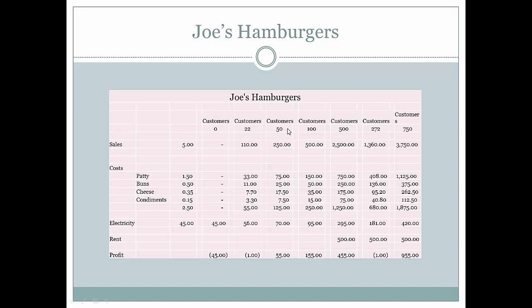Now with 50 customers, he earns $250. $125 of that is associated with variable costs. His electricity is now $70, and now he has a profit of $55.